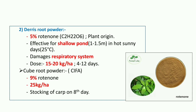The second toxicant is Derris root powder, whose active ingredient is Rotenone, present at 5%. It is also of plant origin and is effective for shallow ponds of 1 to 1.5 meter depth on hot sunny days above 25°C. It damages the respiratory system of fish. The dose is 15 to 20 kg per hectare for 4 to 12 days.